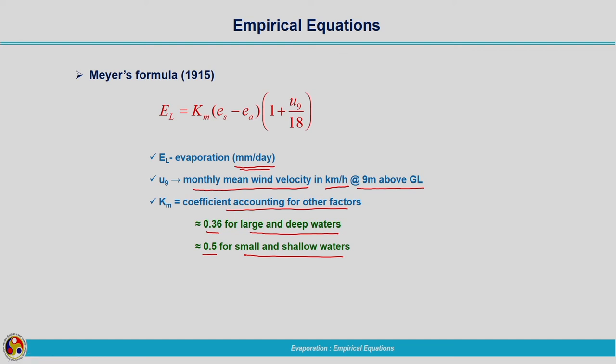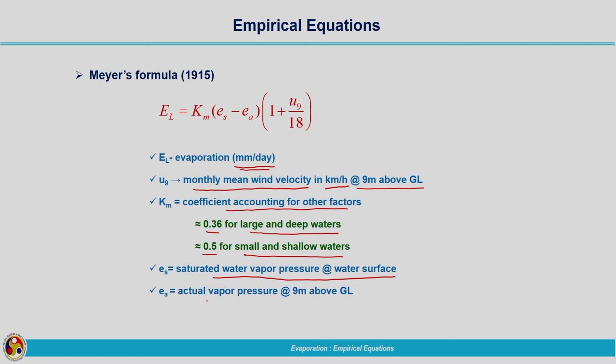Es is the saturation vapour pressure at the water surface — the first layer just above the water surface is assumed to have saturation vapour pressure. Ea is the actual vapour pressure at 9 metres above the ground level, which is the same height at which wind velocity is measured. At this height, we consider the vapour pressure corresponding to the temperature prevailing at that time.